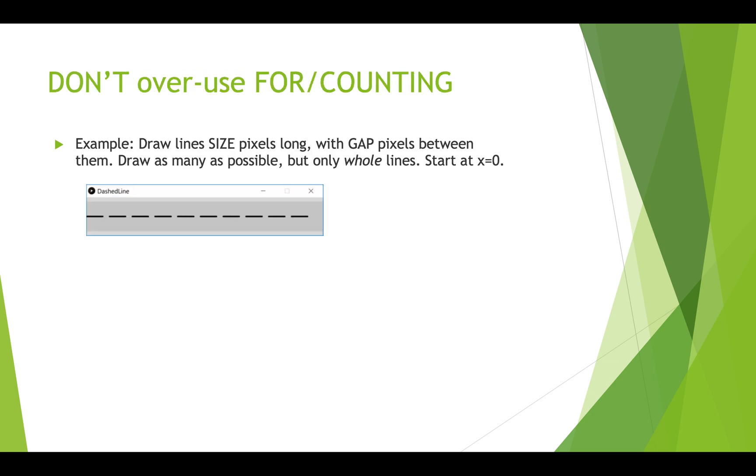All right. So one last thing to talk about here is to just be careful about overusing the for loop or the counting loop. So sometimes it's really complicated to figure out how many times you'd need to iterate. It's possible but complicated. And really, there's an easier way to do this using a while loop.